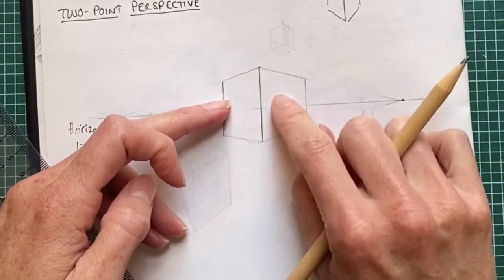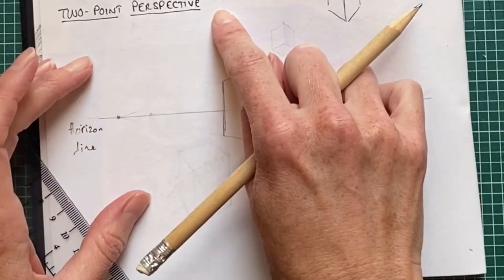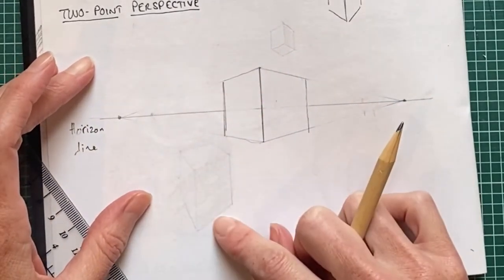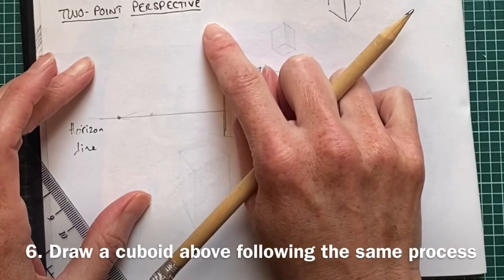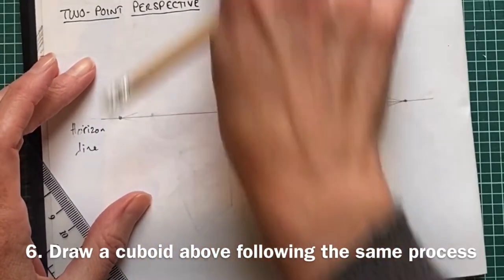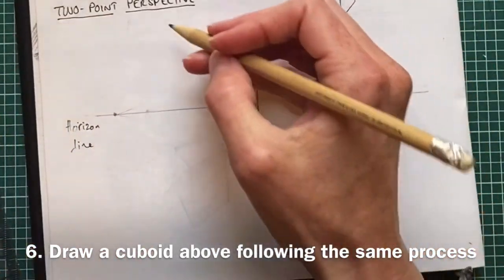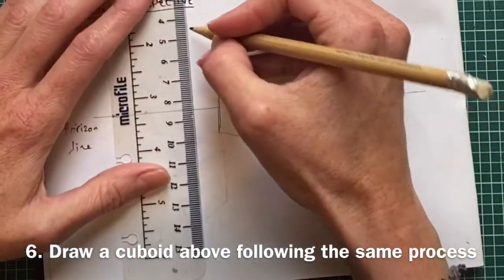We're going to try another box above the horizon line and another one below. For the one above, we should be looking up at it, which means we'll see the base of it, just like we did on the first one. I'm going to start in a similar way.